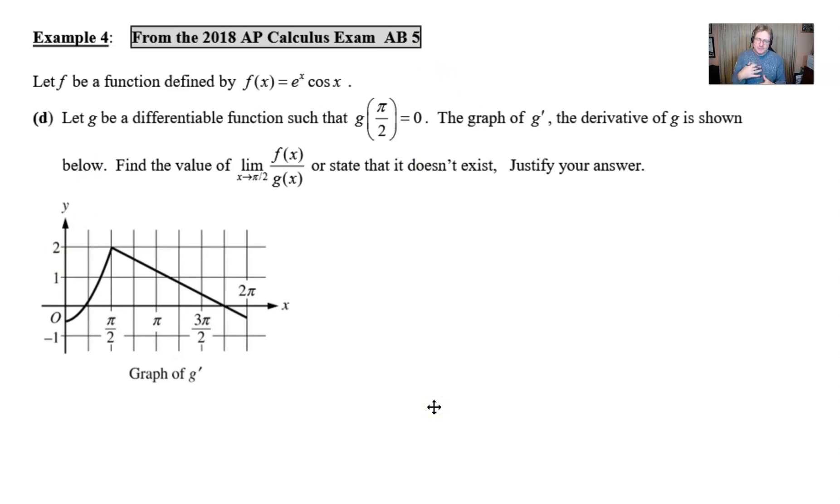The problem started off with some information about a function f(x) defined as e^x times cosine x, and it walked us through three parts A, B, and C, and then it finally came to this conclusion with part D, and it was worth three points.